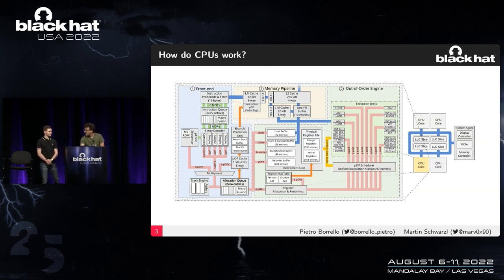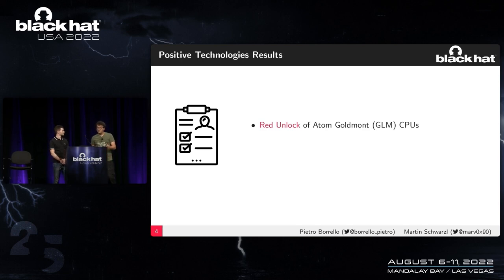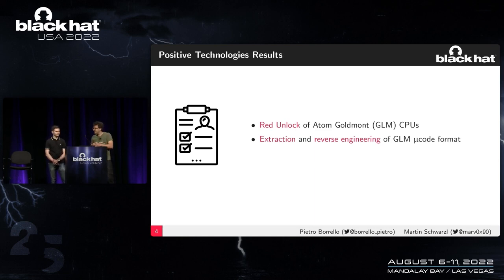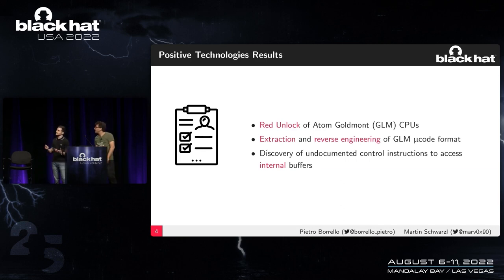We need to discuss the red unlock finding from Positive Technologies, from Mark Ermolov and his team. They found an exploit in the SMM engine and managed to red-unlock the CPU into a special debug state, reading out caches and staging buffers. Based on that they extracted and reverse-engineered the gold mode microcode format, presented a disassembler, and discovered new undocumented instructions that control access to internal buffers.